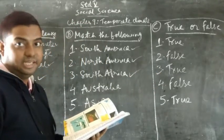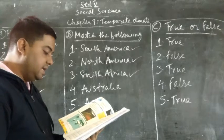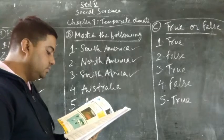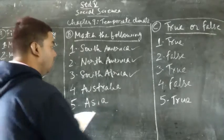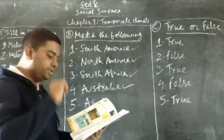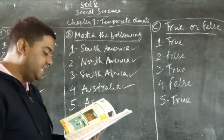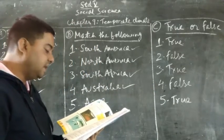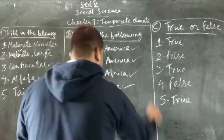Question number 4 is Down — the answer is Australia. Question number 5 is Sea — the answer is Asia.